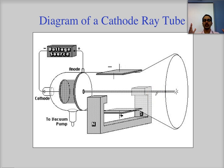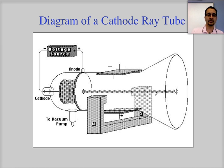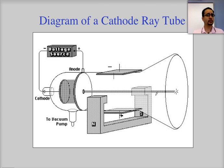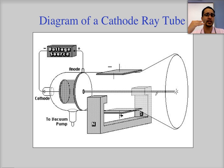Nobody knew what cathode rays were. They knew that they were produced in a vacuum and that they traveled from the cathode to the anode — the cathode being negatively charged, the anode positively charged. But it was unknown whether these rays, which were slightly greenish in color, were light or particles. That's what Thomson is trying to find out. He decided to put some horizontal electrical plates connected to a battery to see if he could alter the path of the cathode rays, and he similarly tested this with magnets.